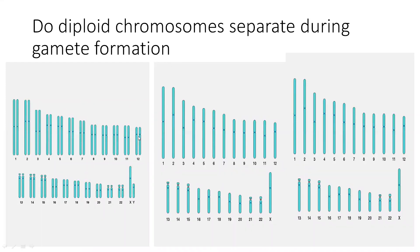If these are the 23 pairs of chromosomes, as per the law of segregation, the homologous chromosomes separate. When you get gametes, one gamete will have one chromosome of each pair, and the other gamete will get the other chromosome of each pair.